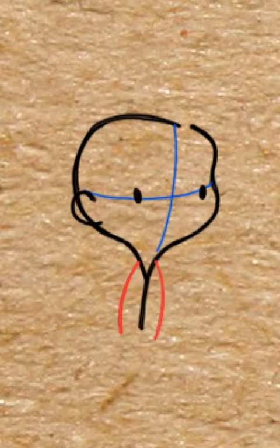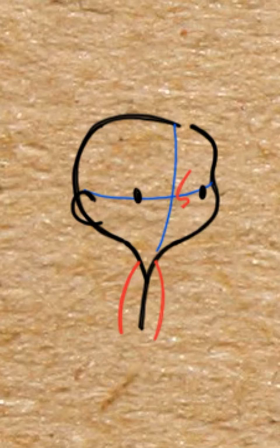Go ahead and draw a curved line on both sides of his body. Then draw a letter S nose and a curved line for a smile. He's happy.